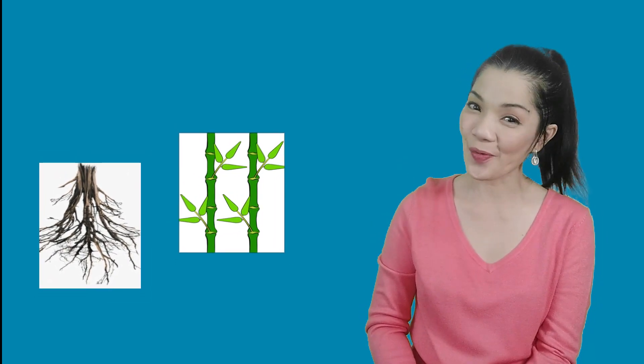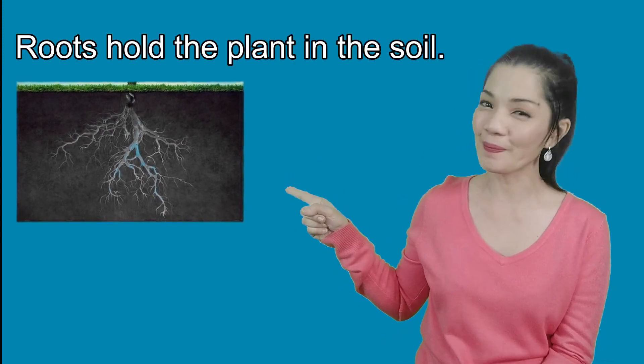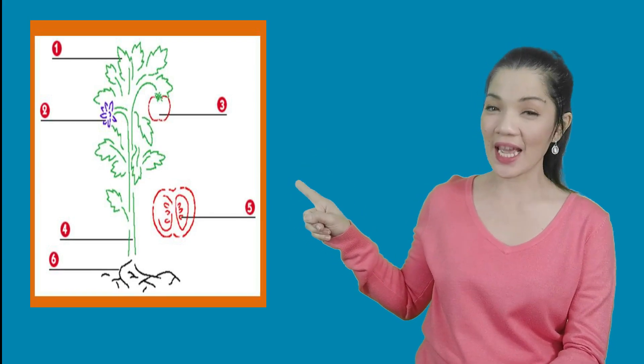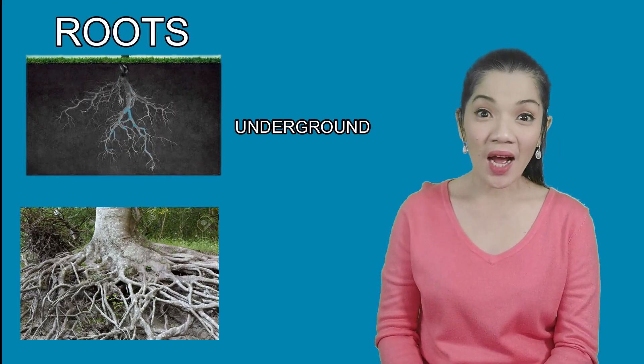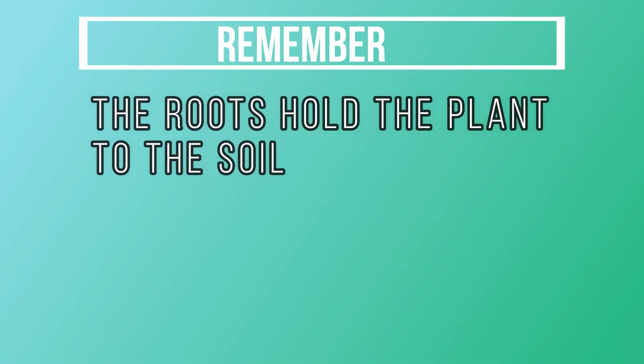The part that helps the plant get water, make food, and grow — the first plant part we're gonna look at today are the roots. Roots have a special job. Roots hold plants in the soil. Look at the diagram and find the part of the plant that stays underground. Roots are usually underground, but can be above ground too. Have you ever seen a tree that looks like this? Remember, the roots hold the plant to the soil.